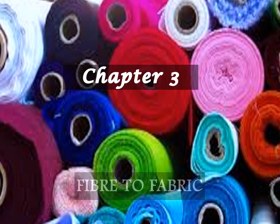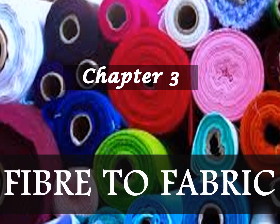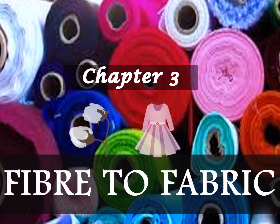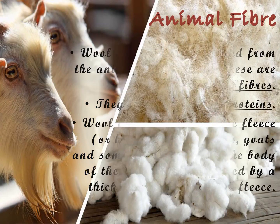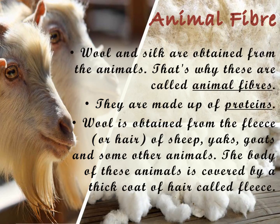Chapter 3: Fiber to Fabric. Wool and Silk are obtained from animals, which is why these are called animal fibers. They are made up of proteins. Silk is obtained from the cocoon of silk worms.